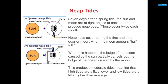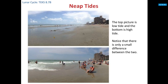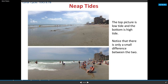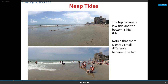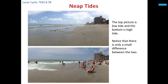Let's take a look at neap tides. The top picture shows people on a beach at low tide and the bottom one is the high tide. As you can see, there's not as much of a difference — the water is coming up to their feet in the high tide. Notice that there is only a small difference between these two.